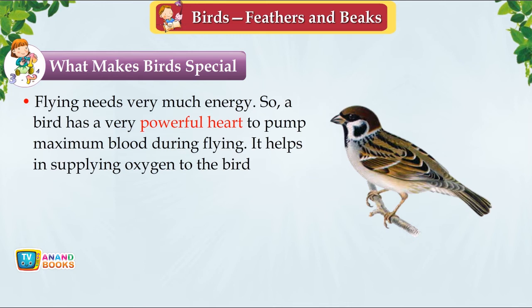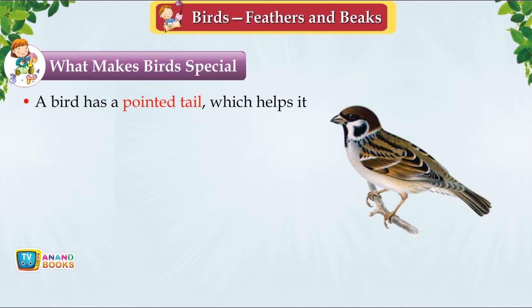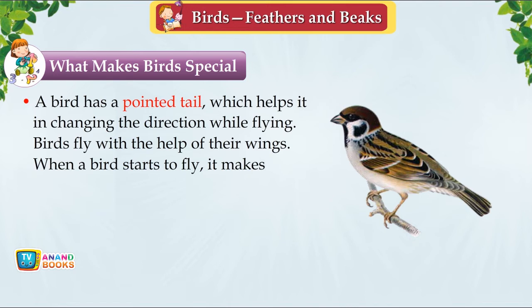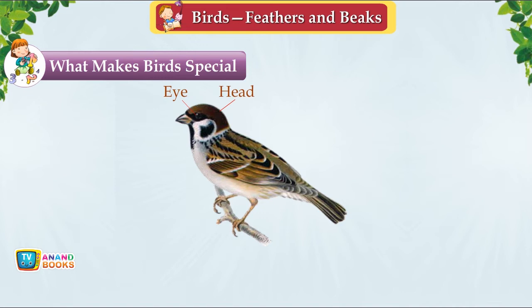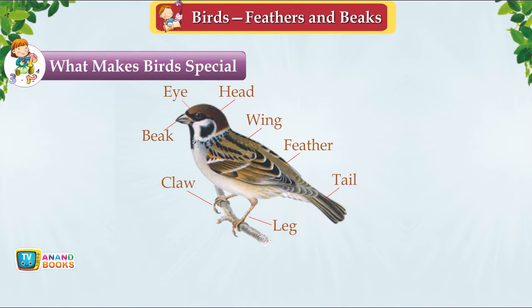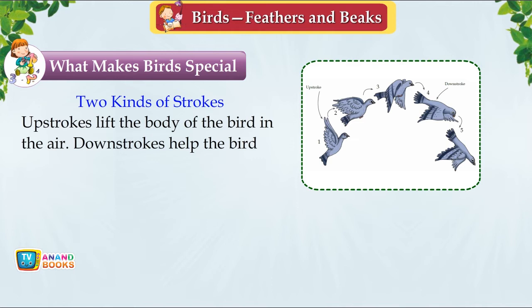A bird has a pointed tail to help change direction while flying. When a bird starts to fly, it makes two kinds of strokes with its wings: upstroke and downstroke. Upstrokes lift the body into the air; downstrokes help the bird come down. When remaining in the air for a long time, the bird glides and flaps its wings.